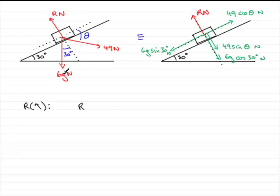The component from the 6g is going to be 6g cos 30, as you can see over here. And it acts in the opposite sense to the arrow, so therefore it's going to be minus 6g cos 30 degrees.